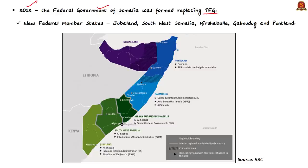The Federal Government of Somalia was formed in 2012, replacing the Transitional Federal Government established in 2004. Under this federal government, the new federal member states are Jubaland, Southwest Somalia, Hirshabelle, Galmudug, and Puntland. This covers the geographical and political history of Somalia.